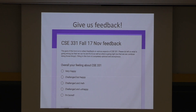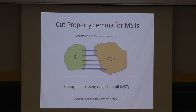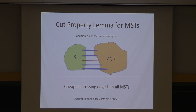All right. So last time we proved the cut property lemma, used it to prove the correctness of Prim's, and then quickly went over the proof of Kruskal. Today I'm going to repeat the statement of the cut property lemma and then go over the proof of correctness for Kruskal again. We make an assumption that all edge costs are distinct, and in about 10 minutes we'll see how to get rid of this assumption.